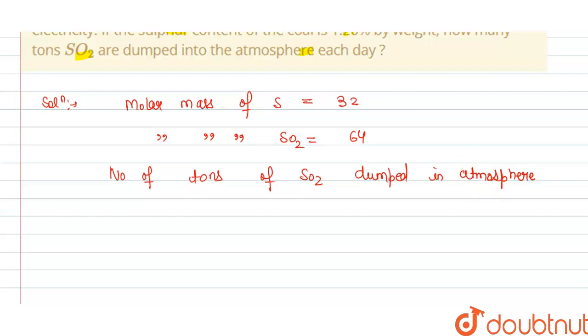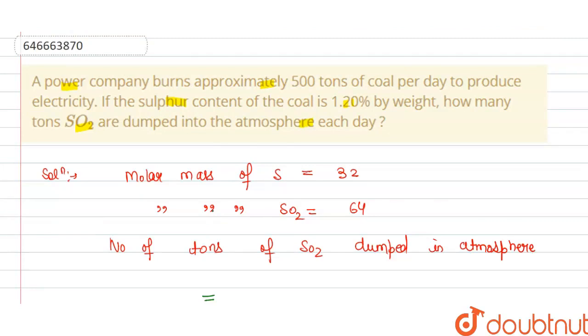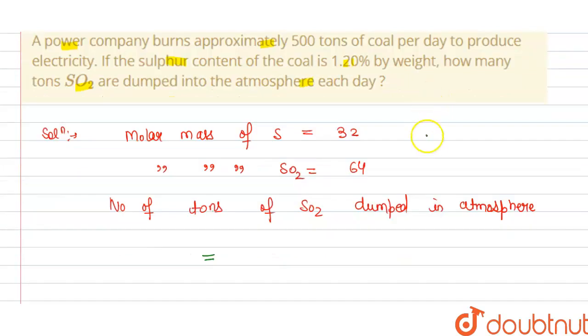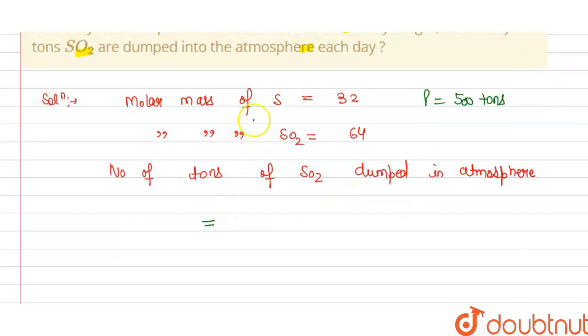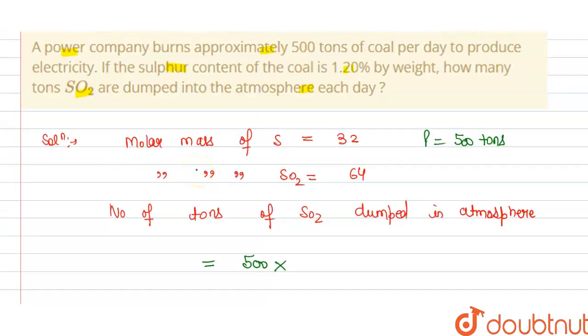So we have, this equals to, given to us we have 500 tons. So we can write here P is given to us 500 tons, and we have 500 tons, and this is multiplied by: